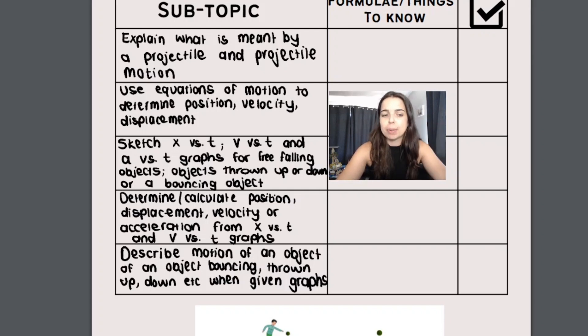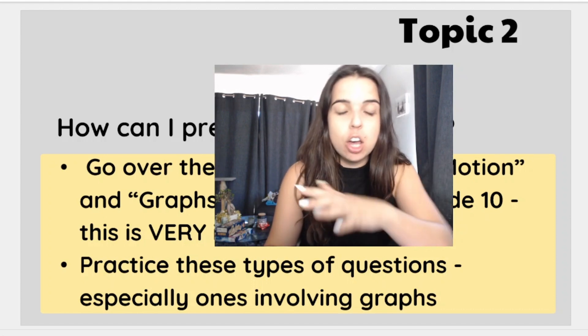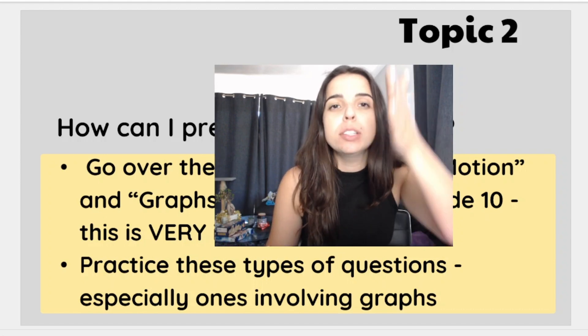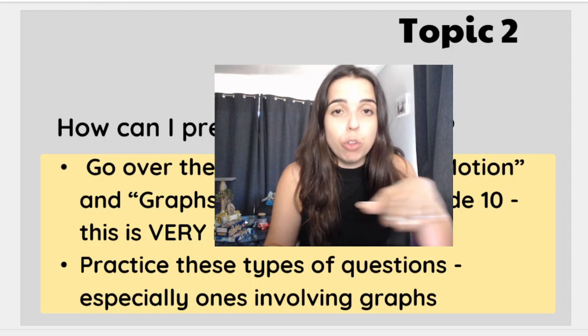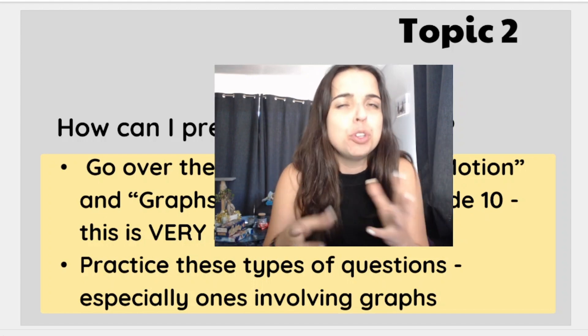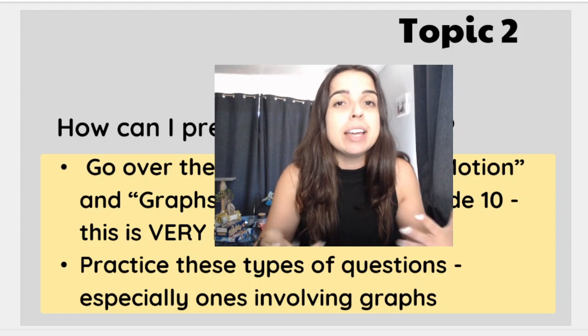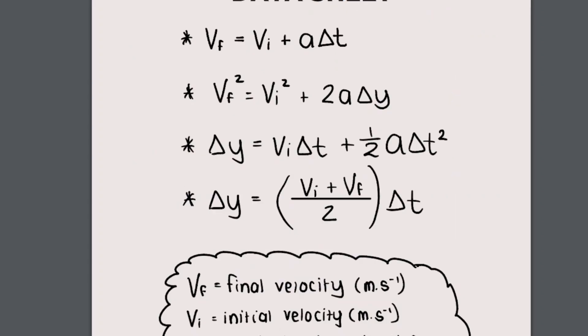How can you prepare for this topic? To prepare for vertical projectile motion I would recommend going over the topic equations of motion and graphs of motion from grade 10. This is very very very important. Practice old graphs of motion questions, practice old equations of motion questions. Remember in grade 10 you did horizontal motion which means you did motion along the horizontal plane. Vertical projectile motion is basically the same thing but along the vertical plane, so up and down. In grade 10 we learned how to do equations of motion and graphs of motion for motion along the horizontal, so it makes absolute sense to go over this again. When we do vertical projectile motion it's almost the same, there's a few important new concepts that you will learn, but you will apply these equations of motion in the vertical plane. In my free document I have included a data sheet with all of the equations of motion for vertical projectile motion.